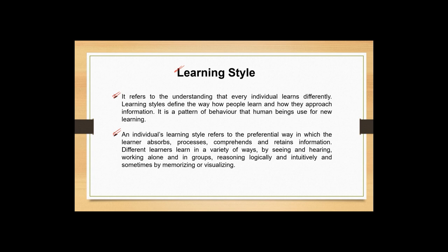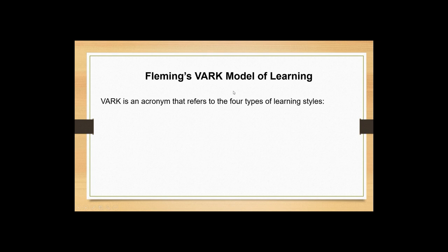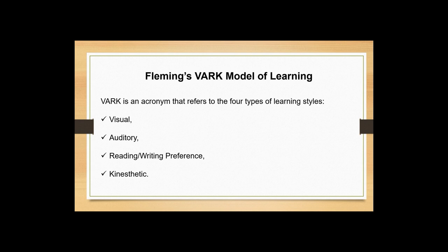Now let's move to Fleming's VARK model of learning. It is a model of learning where VARK is an acronym that refers to four types of learning styles: V is for Visual, A is for Auditory, R is for Reading or Writing preference, and K is for Kinesthetic. Together it becomes Visual, Auditory, Reading/Writing, and Kinesthetic — that is the VARK model of learning.